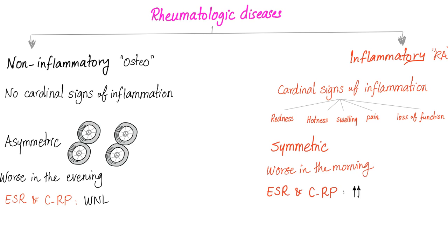Non-inflammatory arthritis, such as osteoarthritis, does not have cardinal signs of inflammation, but inflammatory arthritis does. Inflammatory arthritis has asymmetric arthritis — for example, you wear out your left knee more than the right. Inflammatory has symmetrical arthritis — both left and right knees are affected at the same time. Non-inflammatory arthritis pain is worse in the evening; inflammatory arthritis pain is worse in the morning.